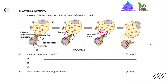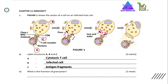Here we can see Figure 1, which shows the action of a cell on an infected host cell. Label structures A, B, and C. Structure A is cytotoxic T cell. Cell B is infected cell. And cell C is antigen fragment.